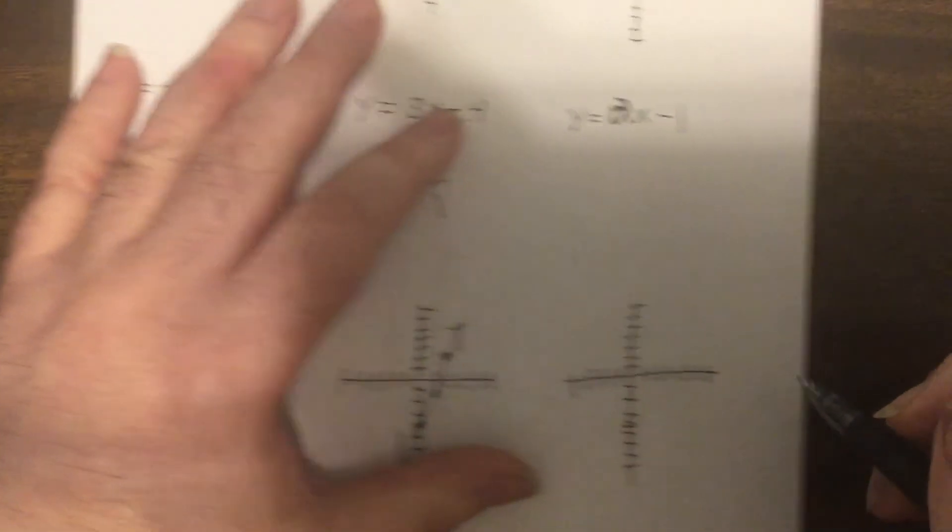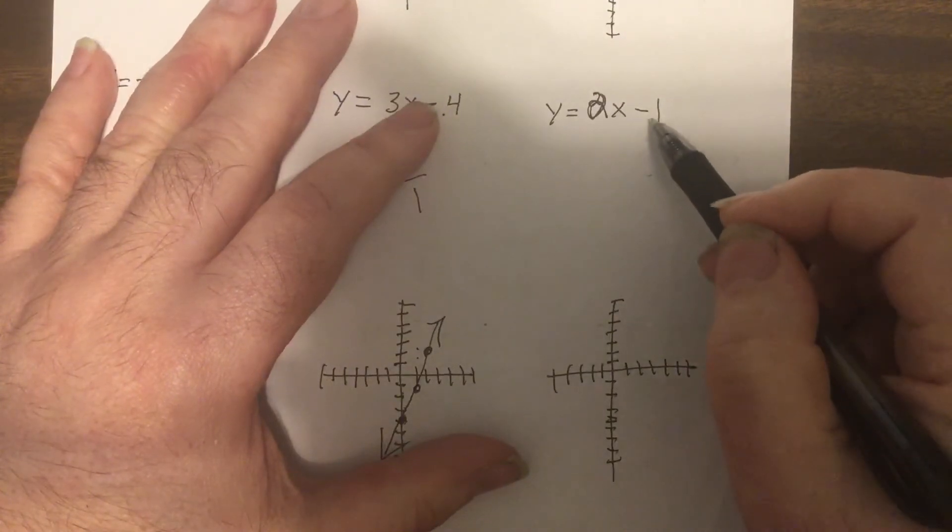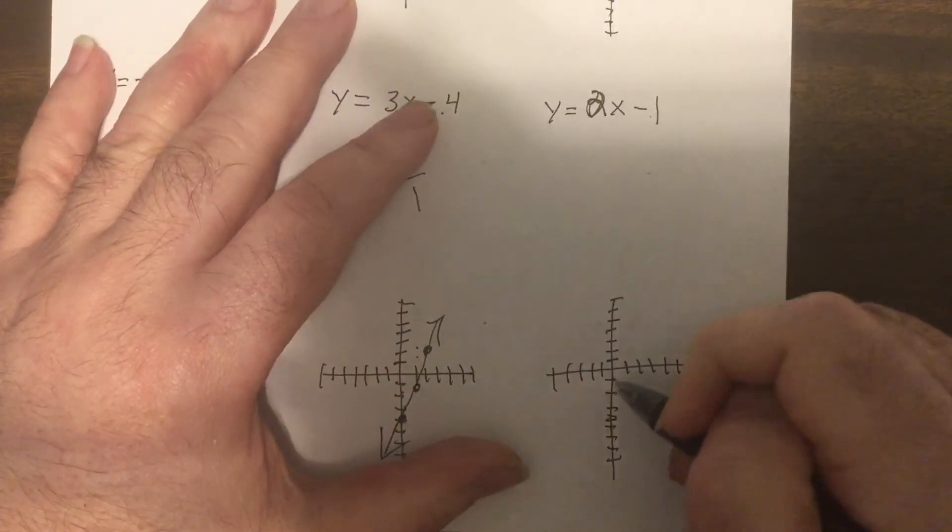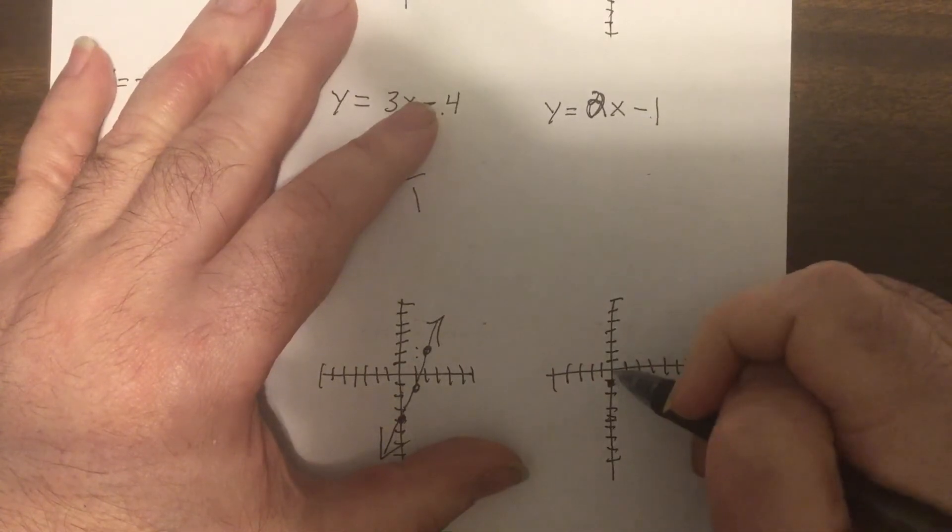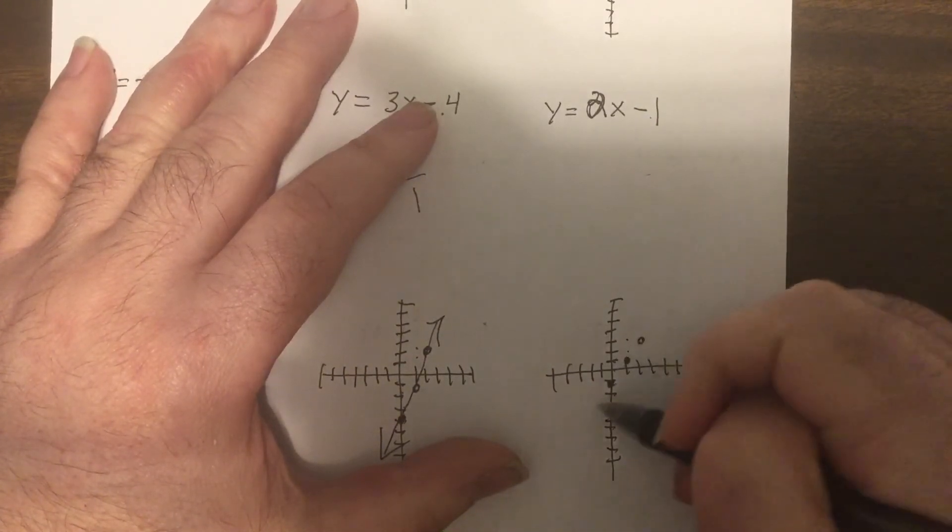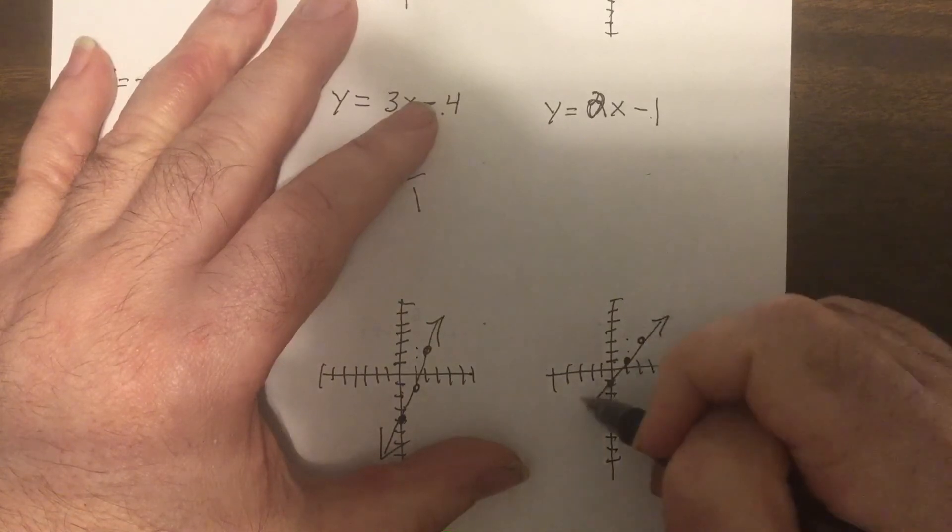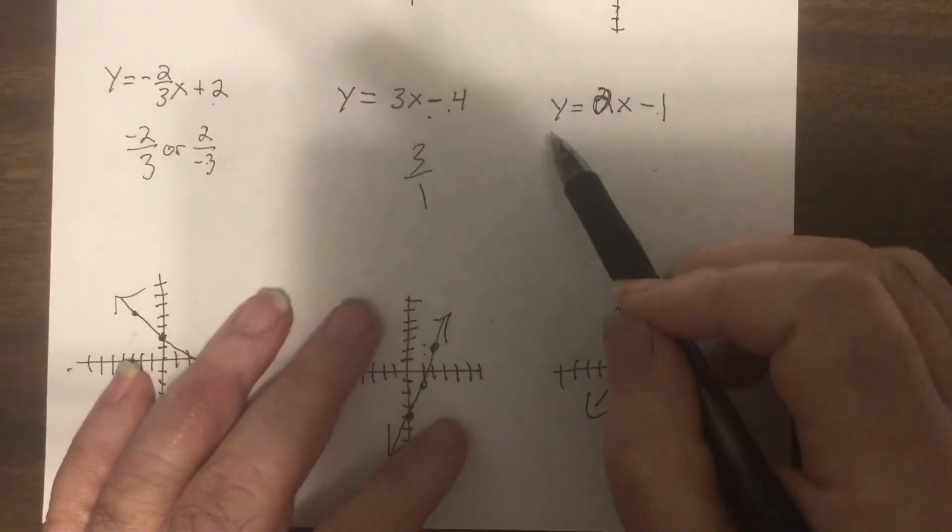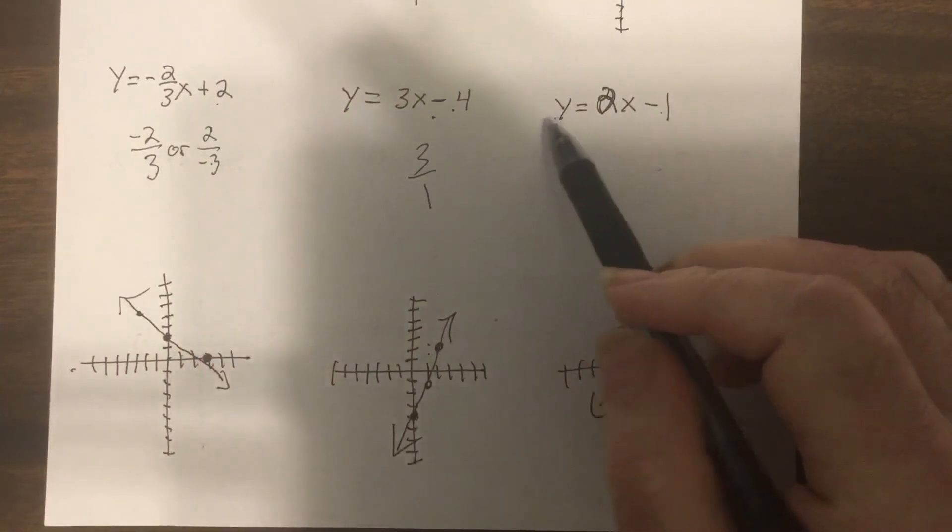And the last one, hopefully you did very easily, y-intercept's negative one, the slope is two, so it'd be up two right one, up two right one. So if an equation is solved for y and it's linear, meaning the graph is a line, I would do it that way, slope intercept.